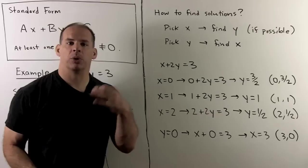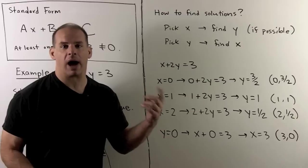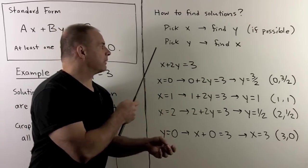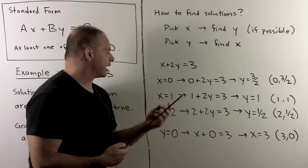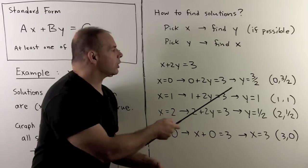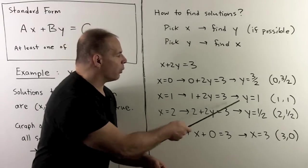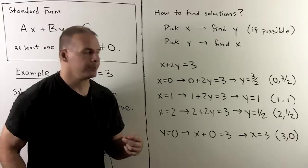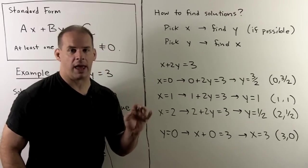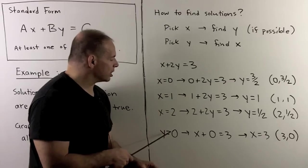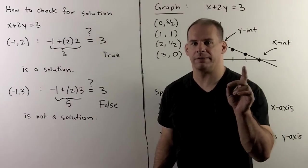To find solutions, we can pick values for x and solve for y, or vice versa. For x plus 2y equals 3: setting x equal to 0 gives y equals 3/2, so solution (0, 3/2). Setting x equal to 1 gives y equal to 1, solution (1, 1). Setting x equal to 2 gives solution (2, 1/2). Setting y equal to 0 gives x equal to 3, solution (3, 0). These are all points on our line.